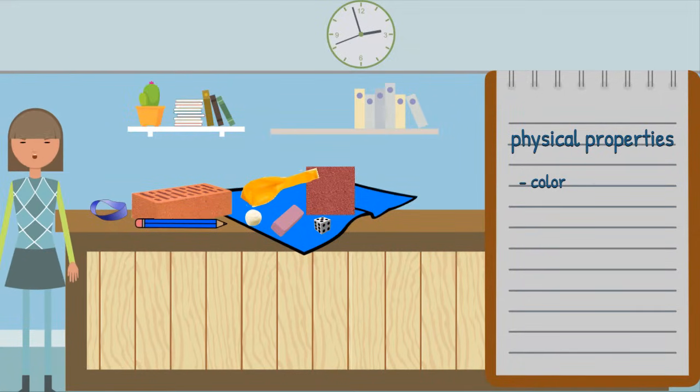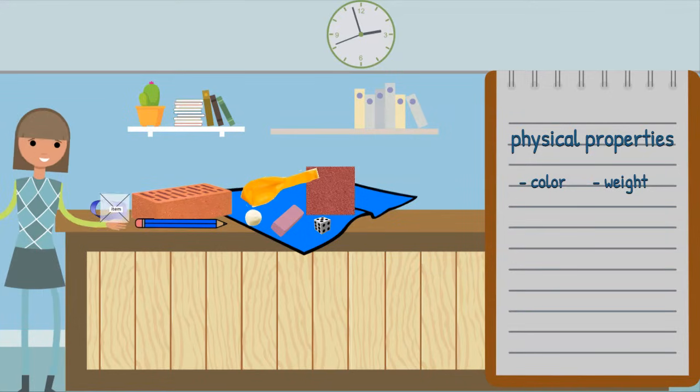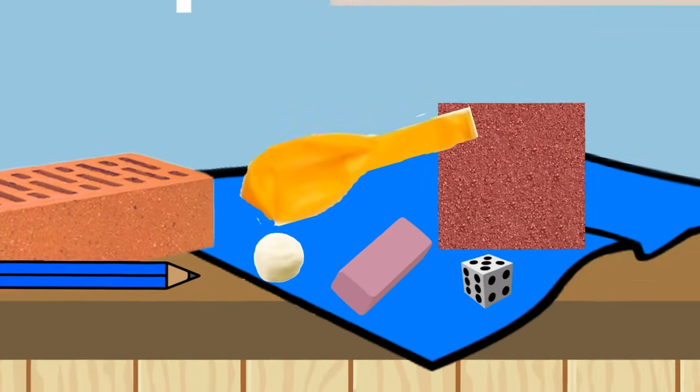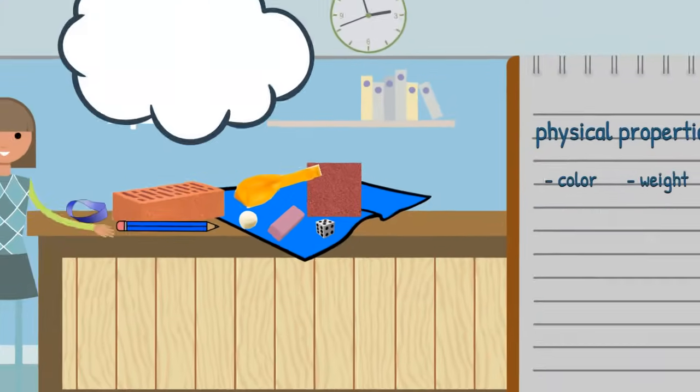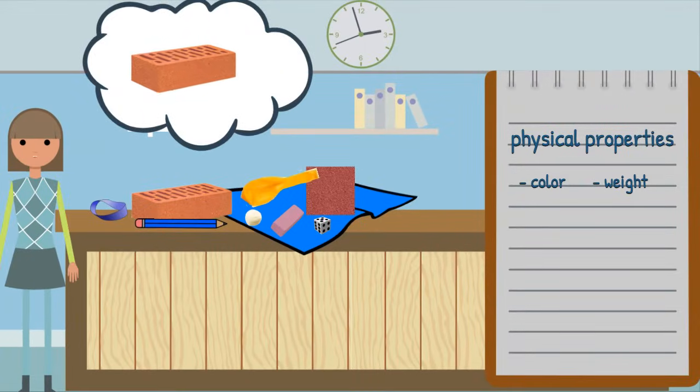Another physical property is weight. This can be measured with a scale, but sometimes we can feel differences in weight. Which of these items would be heaviest? Yes, the brick would be heavier than the other items.